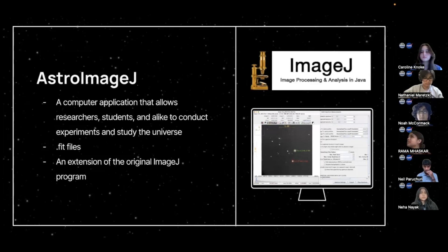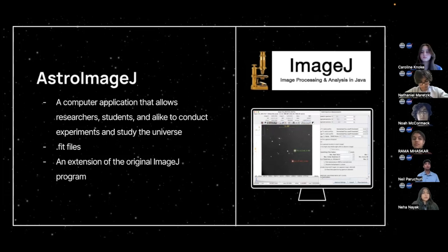So, AstroImageJ is a computer application that allows researchers, students, and alike to conduct experiments and study the universe. The program lets us interact with .fit files, which are like an image, but with interactive properties. They're flexible and allow for interoperable data transfer. AstroImageJ is actually an extension of an older ImageJ program, and the original ImageJ program was developed by the National Institute of Health for Biology, but astronomers saw its value and repurposed it for their use. Astro adds astronomy plugins and macros, and includes tools based on the Gautagen-ImageJ astronomical resources.